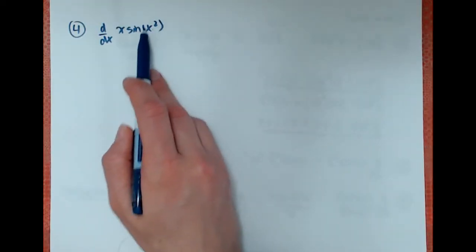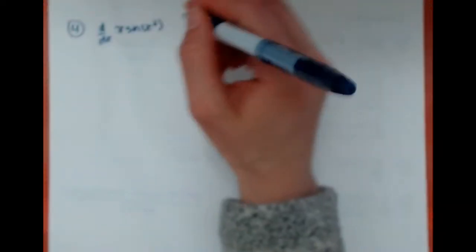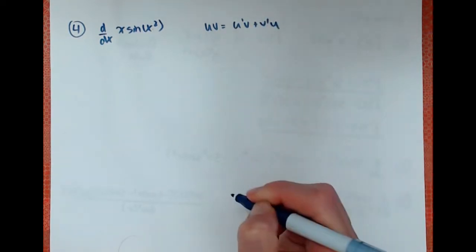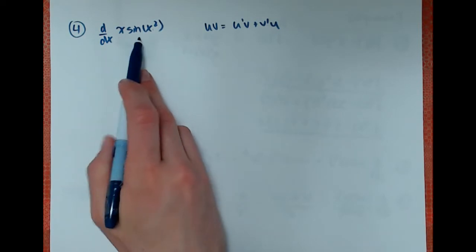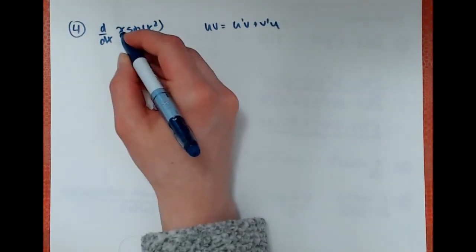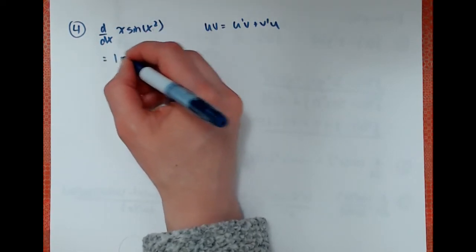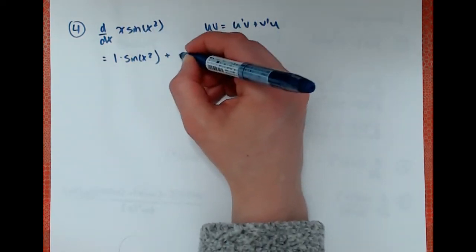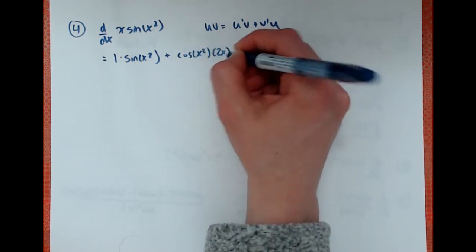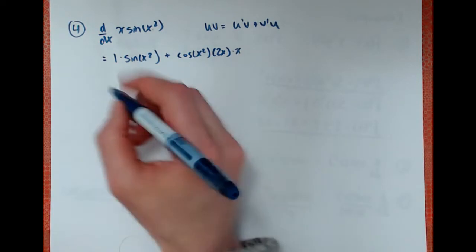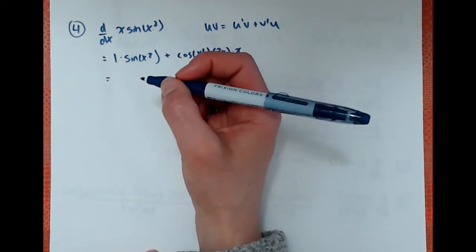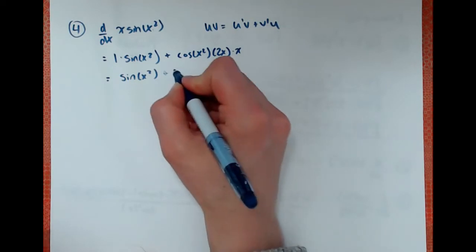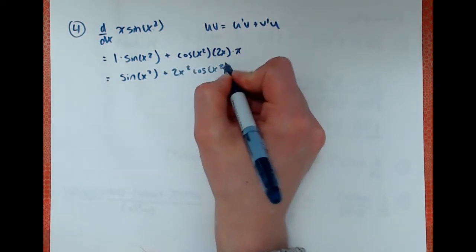We also have chain rule, so we have to take the derivative of the inside. The product rule is u prime v plus v prime u. Our u is x and our v is sine of x squared. The derivative of x becomes 1 times sine of x squared, plus the derivative of sine of x squared, which is cos of x squared times 2x, times x. This simplifies to sine x squared plus 2x squared cos x squared.